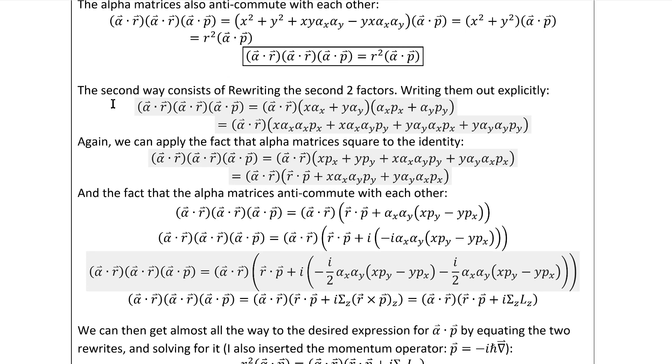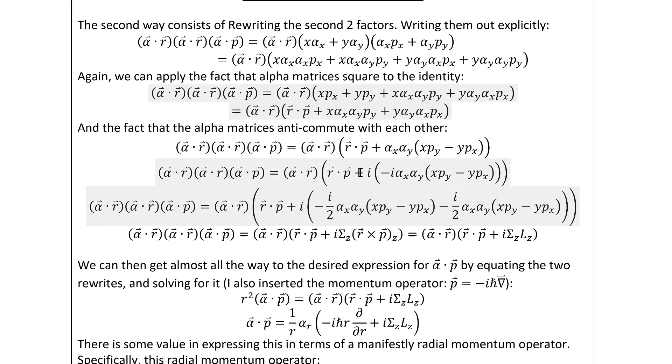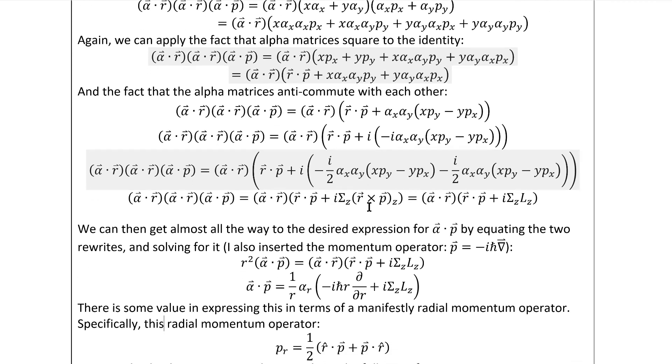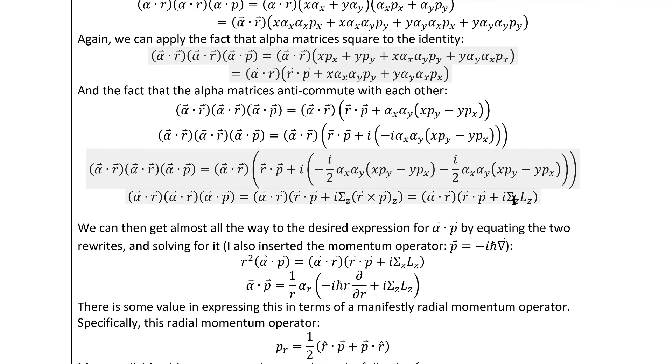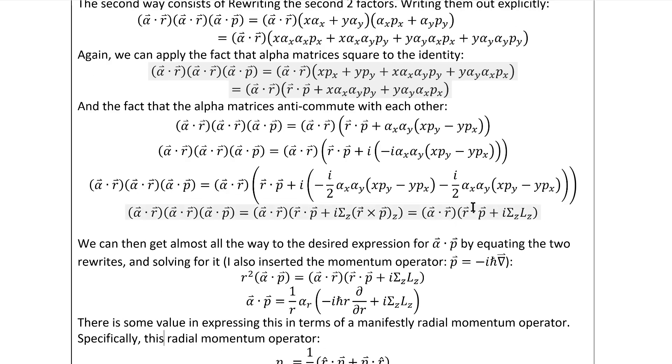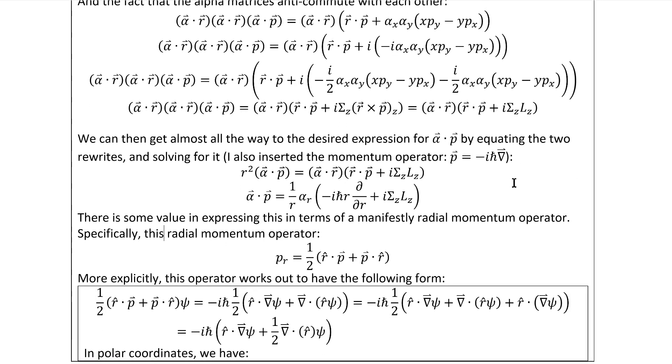The second way consists of rewriting the second two factors, which written out explicitly are these if we multiply them out, and then again apply the fact that the alpha matrices square to the identity and also anti-commute, where we apply the anti-commutativity strategically to get sigma z and lz to show up. We find this result for our second rewrite. We can then get almost all the way to the desired expression for alpha dot p by equating the two rewrites and solving for it. We arrive at this formula.